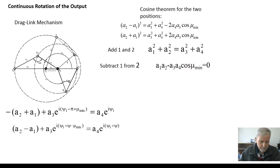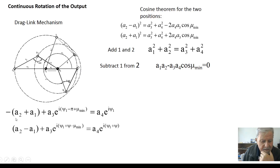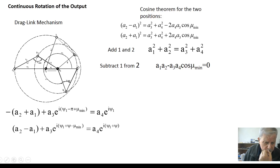In the drag link mechanism, links 2 and 4 — with lengths a2 and a4 — both have complete rotation. When a2 equals 0 and pi, the transmission angle is at its maximum and minimum values. These are the two key positions, with corresponding equations from the loop closure. Note that these are not dead center positions — there is no dead center in this mechanism.